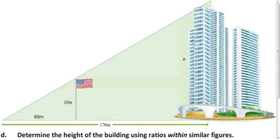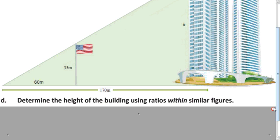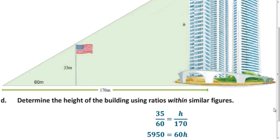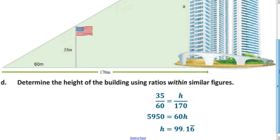Now we want to figure out the height using the within-similar-figures method. Here, we divide 35 by 60, and that has to be the same as H divided by 170. We solve that, and we get the same answer. So, all three methods are equivalent.